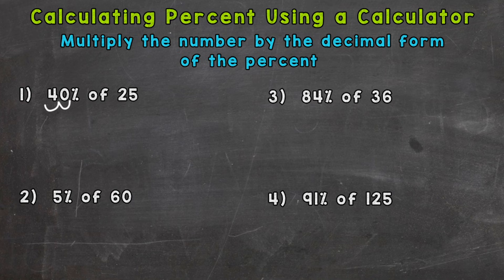One, two — so the decimal form of 40% is 0.40, or 40 hundredths. Now whenever you see the word 'of' — a percent of something, a fraction of something, a decimal of something — we can replace that 'of' with a multiplication sign.